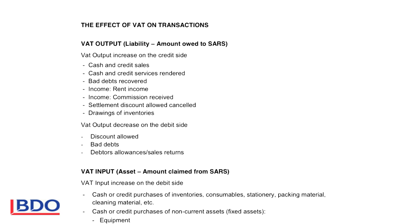The effect of VAT on transactions: VAT output is a liability — the amount owed to SARS because you collect money on behalf of SARS. VAT output will increase on the credit side because the liability increases on the credit side. Transactions that increase VAT output include selling goods for cash or on credit, rendering services for cash or credit, recovering bad debts, receiving any income such as rent income or commission received, and collecting VAT on behalf of SARS on all income.